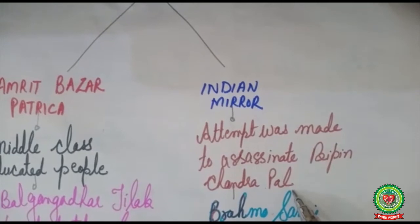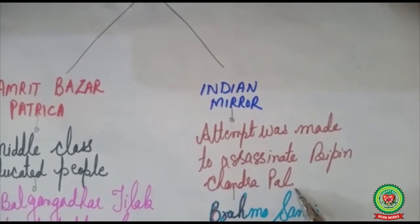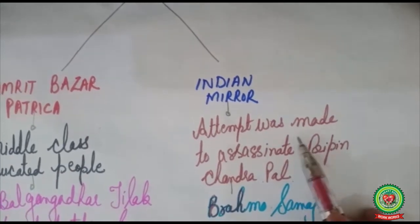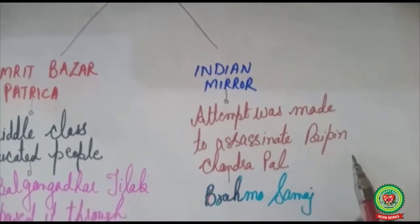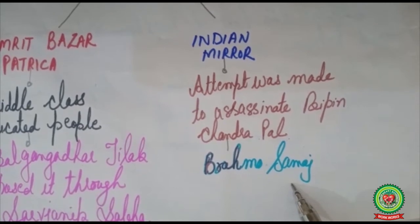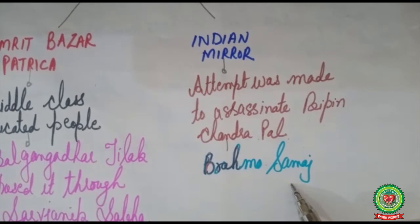Bipin Chandra Pal, who was also an assertive leader, favored the passing of the Age of Consent Bill 1891, and due to that, some attempts were also made to kill him. Brahmo Samaj, which was set up by Raja Ram Mohan Roy, also favored the passing of the bill and increasing the age of marriage of Hindu girls from 10 to 12.